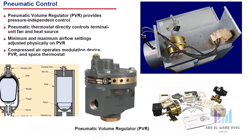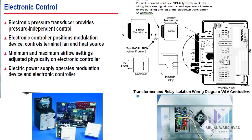A pneumatic volume regulator (PVR) provides pressure independent control of the VAV terminal unit. The PVR is connected to the airflow measurement device and the pneumatic space thermostat. The PVR directs the actuator to position the modulation device to deliver the required airflow to the space. The pneumatic thermostat signal is used to reset the airflow set point and directly controls the terminal fan and heat source. Minimum and maximum airflow settings are physically adjusted on the PVR. Compressed air is required to operate the modulation device and to power the PVR and the space thermostat.